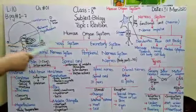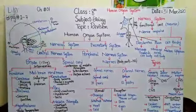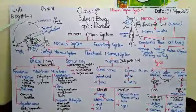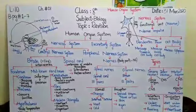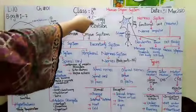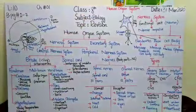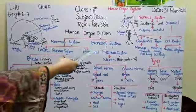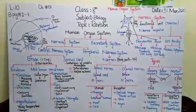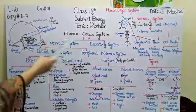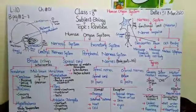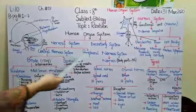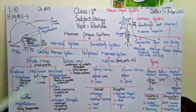Assalamu alaikum class, this is your biology lecture number 10. Today we will revise chapter number 1 from page number 1 to 7. Our chapter is the human organ system. In this chapter we study two systems: first, the nervous system, and second, the excretory system. Today we will cover just the nervous system.